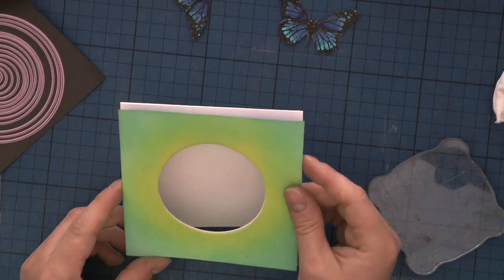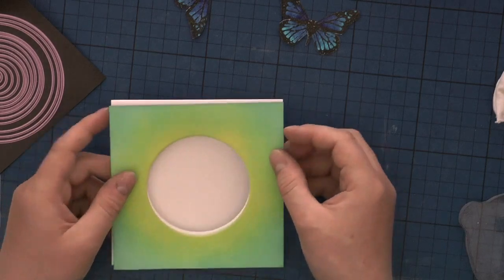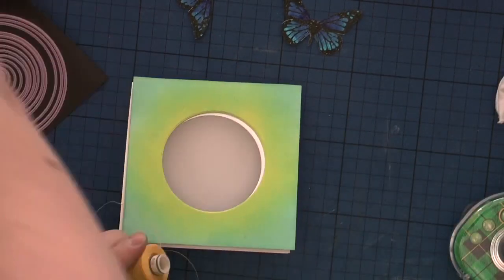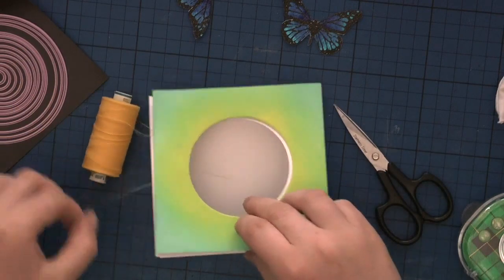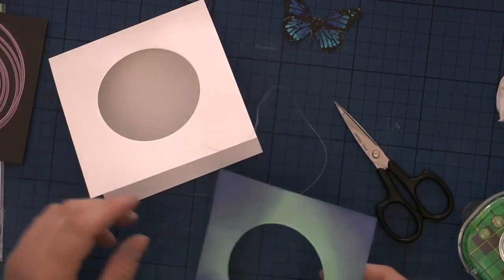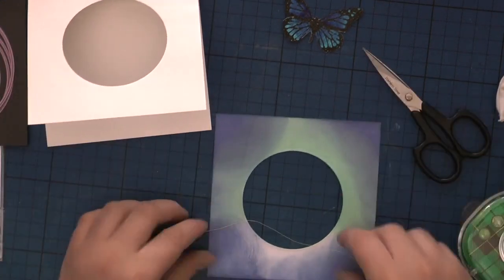I'm going to adhere it using Tombow Mono liquid glue. But before I do that, a crucial moment: I'm going to add some thread behind my front panel. As you can see, I tried different color combinations for my card front.